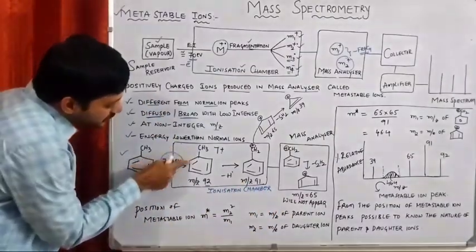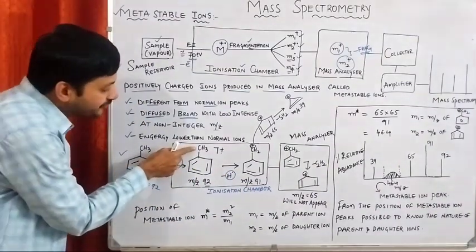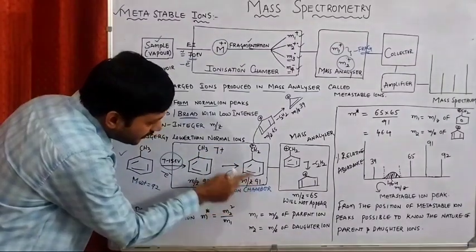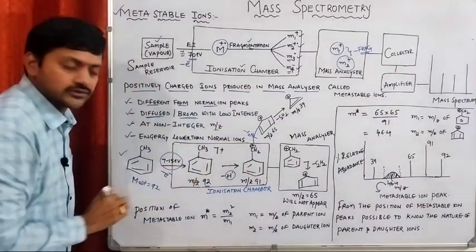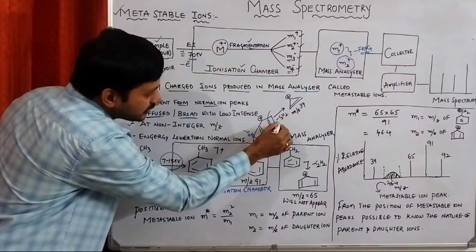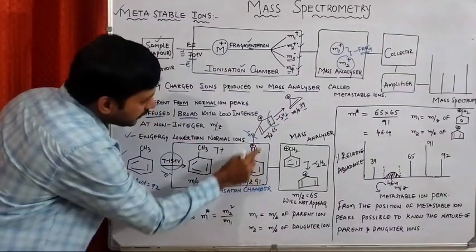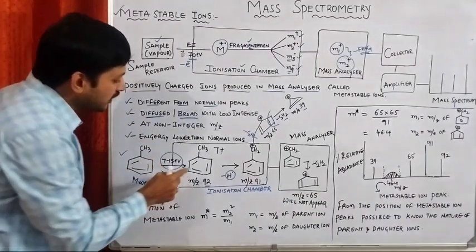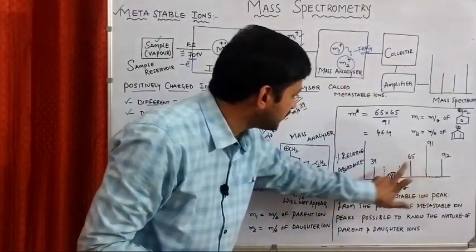In the ionization chamber, from the molecular ion we remove an H radical from the CH₃ group, producing a CH₂⁺ benzyl cation with m/z = 91. This is subjected to further fragmentation where elimination of C₂H₂ takes place, producing a cation at m/z = 65. Again, elimination of C₂H₂ gives m/z = 39. So four different peaks are observed — 92, 91, 65, and 39 — corresponding to four different ions formed in the ionization chamber.